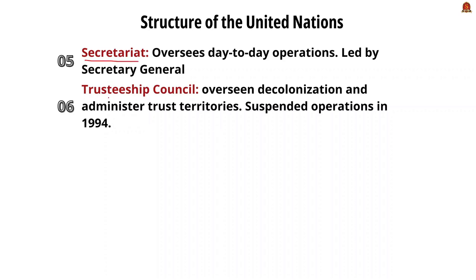The UN structure also includes the Secretariat and the Trusteeship Council. The Secretariat oversees day-to-day operations and is headed by the Secretary-General. The Trusteeship Council was formed to oversee decolonization and administer trusted territories held with the United Nations; it suspended operations in 1994. So now there are five major active bodies of the United Nations.